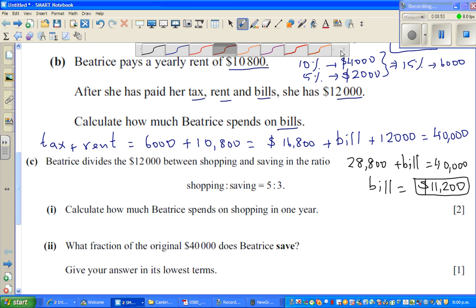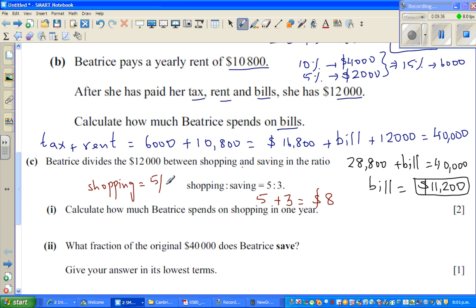Let me change color. Now what does it say? Beatrice divides the $12,000 that she has between shopping and saving in the ratio of shopping to saving of 5 to 3. So what does this mean? For every $8, so where did I get the 8? 5 plus 3 is 8. So this ratio tells me, for every $8, she spends $5 on shopping and $3 on saving. In other words, on shopping she is spending $5/8 of $12,000. And on saving she is spending $3/8. Calculate how much she spends on shopping in one year.